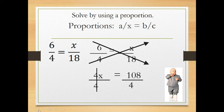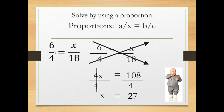So it turns out the fraction 6/4 is equal to 27/18 — those two fractions are equivalent. If you take 6 divided by 4 on a calculator, you get 1.5. And if you take 27 divided by 18, you also get 1.5. So they are, in fact, equal.